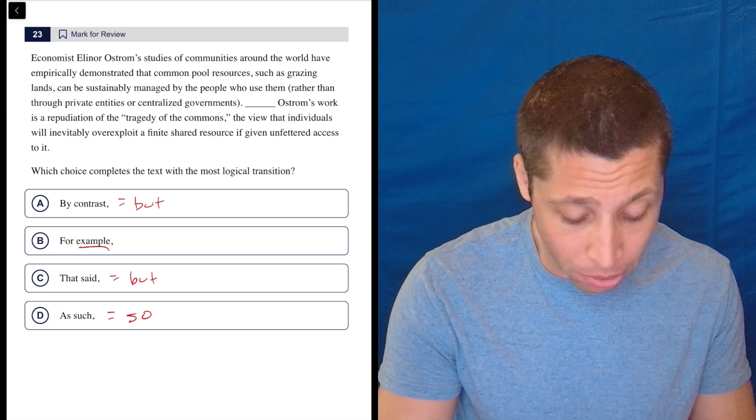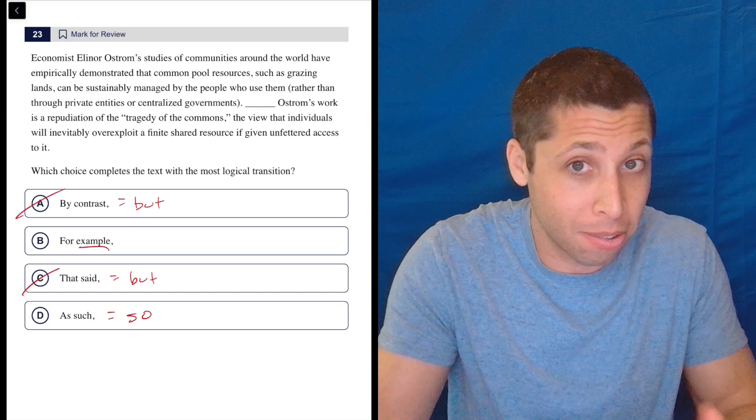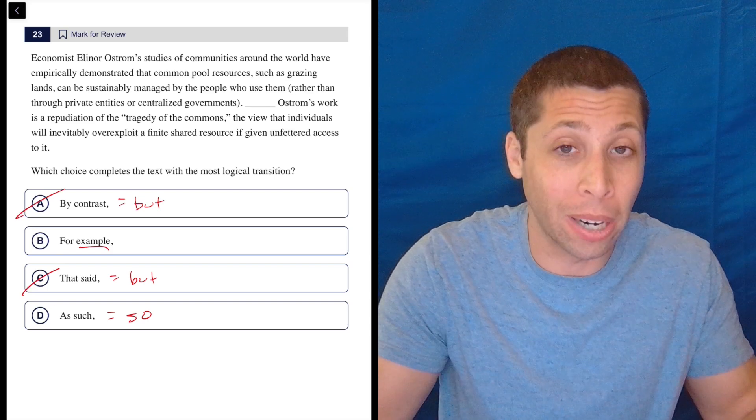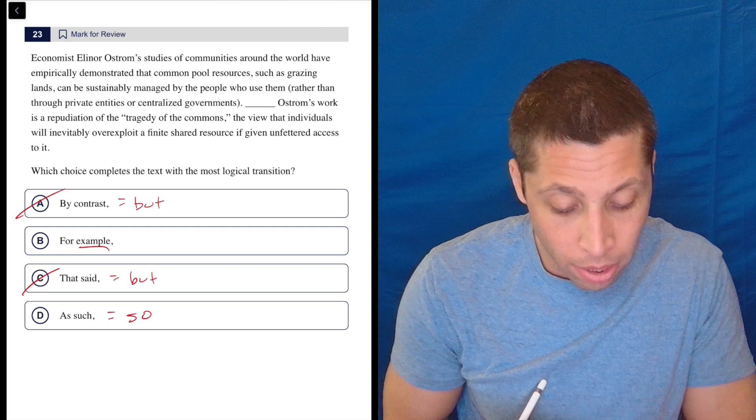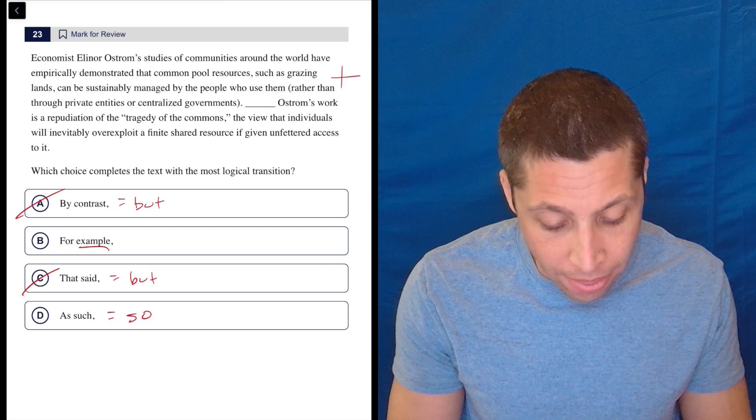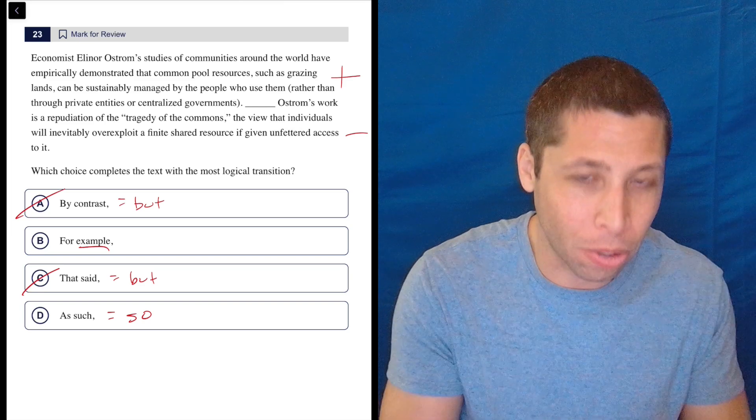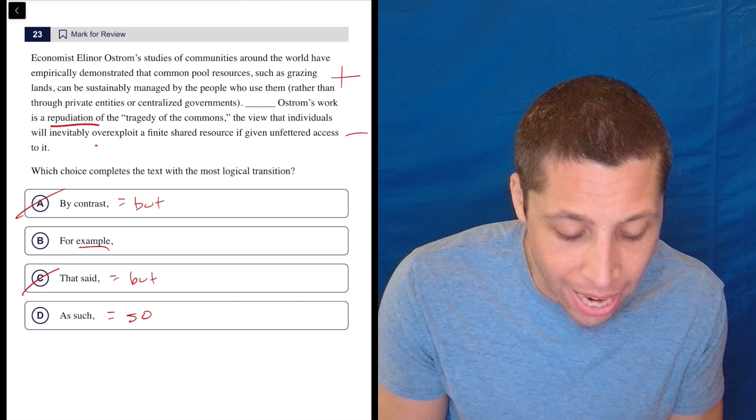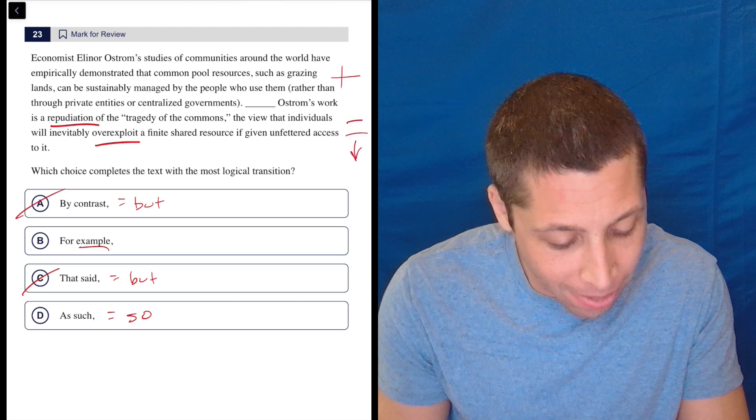Well, thank God I know the dumb summaries here. It's not a but. I would cross them both out because they both are the same category. But I think a lot of people are going to want to put but here because they're like, these things can be sustainably managed. That's positive. And then things will be overexploited. That's negative. But it's not quite what they're saying.